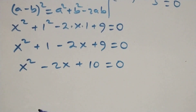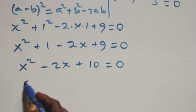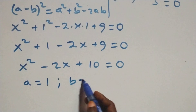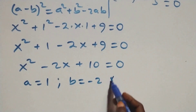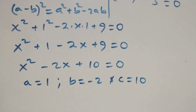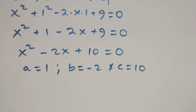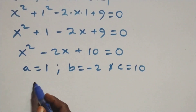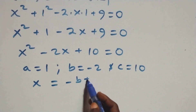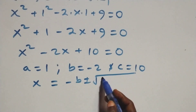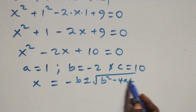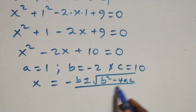In this quadratic equation, a equals 1, b equals minus 2, and c equals 10. We now apply the quadratic formula: x equals minus b plus or minus square root of b squared minus 4ac, all over 2a.